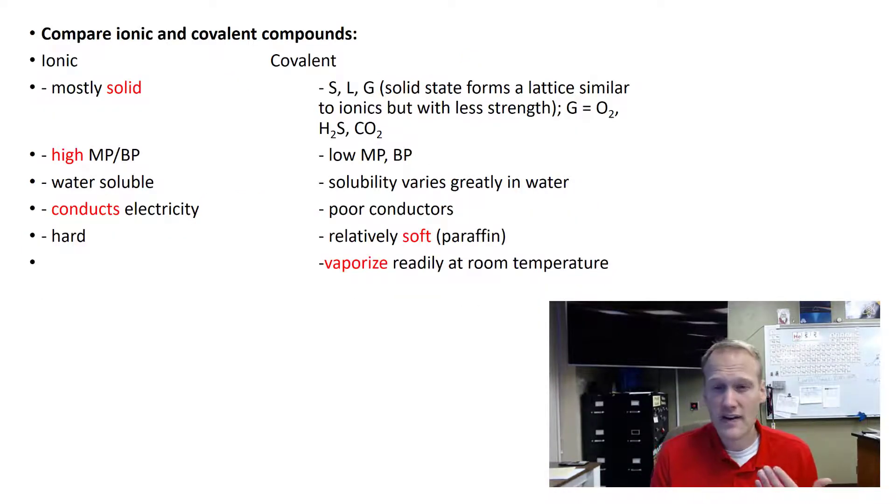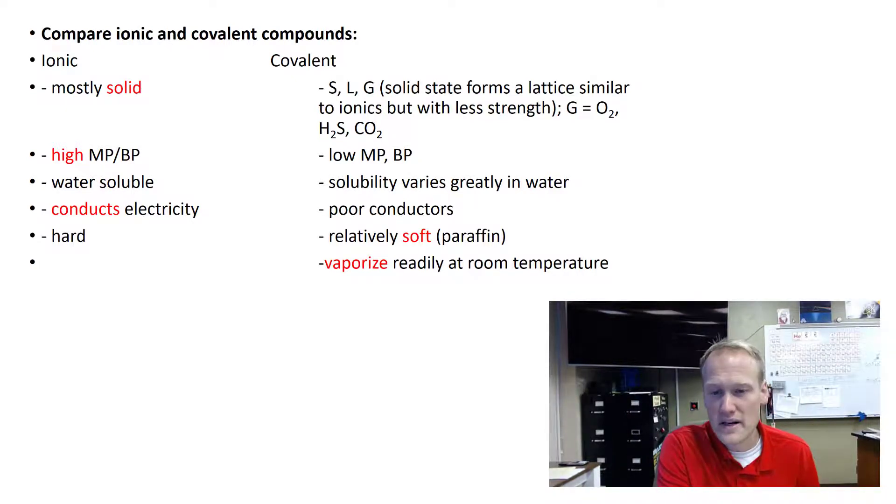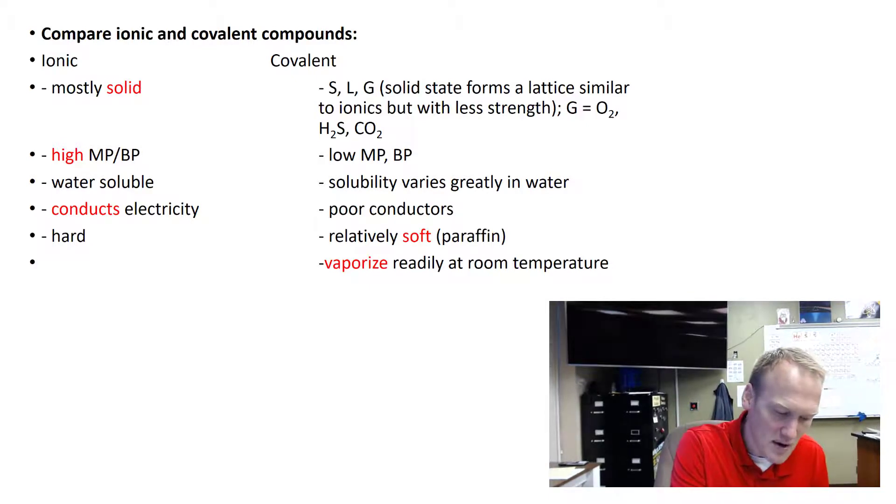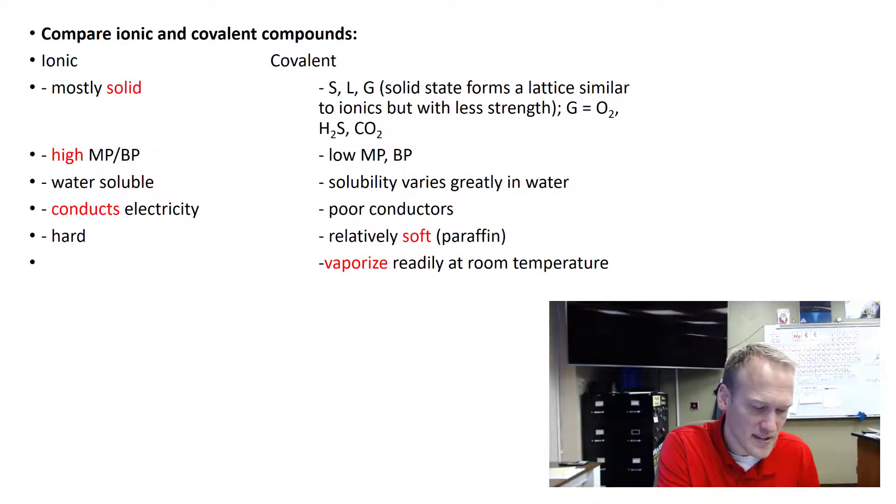So if we compare ionic and covalent substances, ionic substances are going to be mostly solid. They're very rigid and strong 3D structures. So they're going to have a high melting point and boiling point. They're going to be water soluble because they've got that positive and negative cation anion. They're going to conduct electricity in liquid, and they're going to be relatively hard. They're going to be rigid.